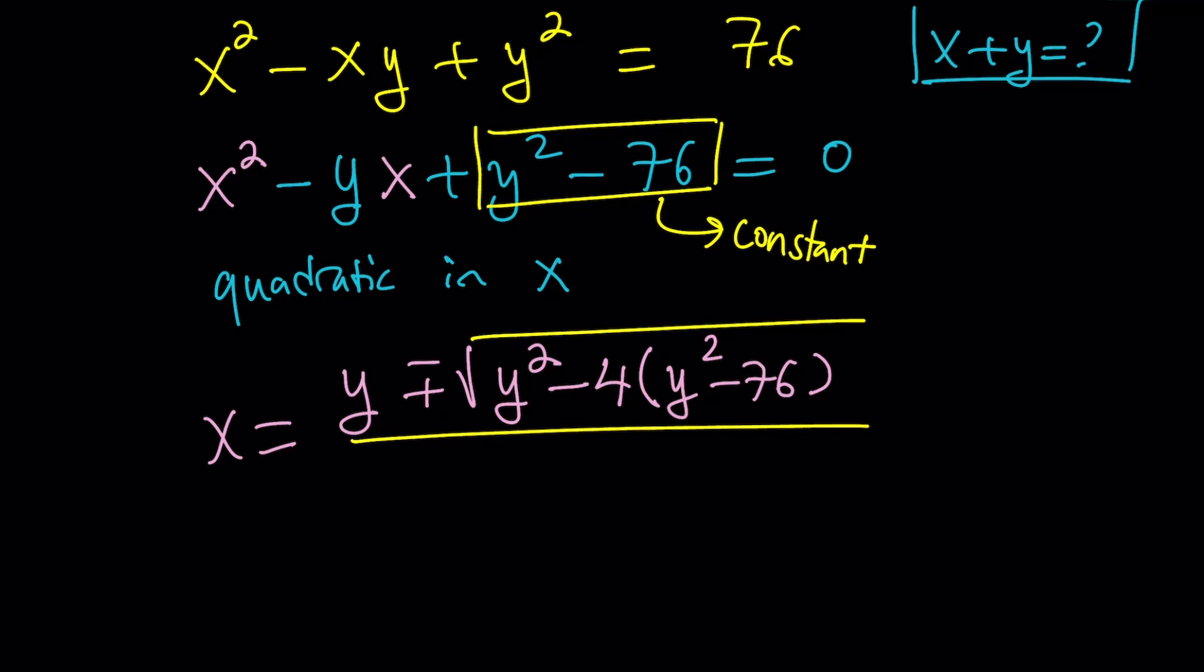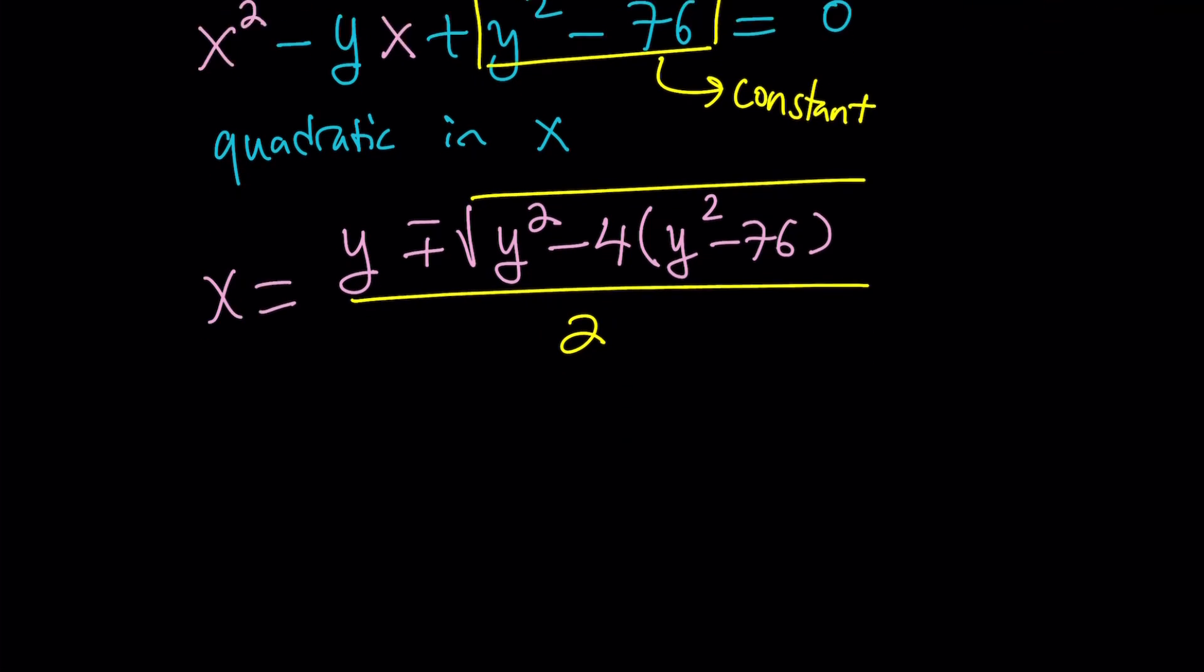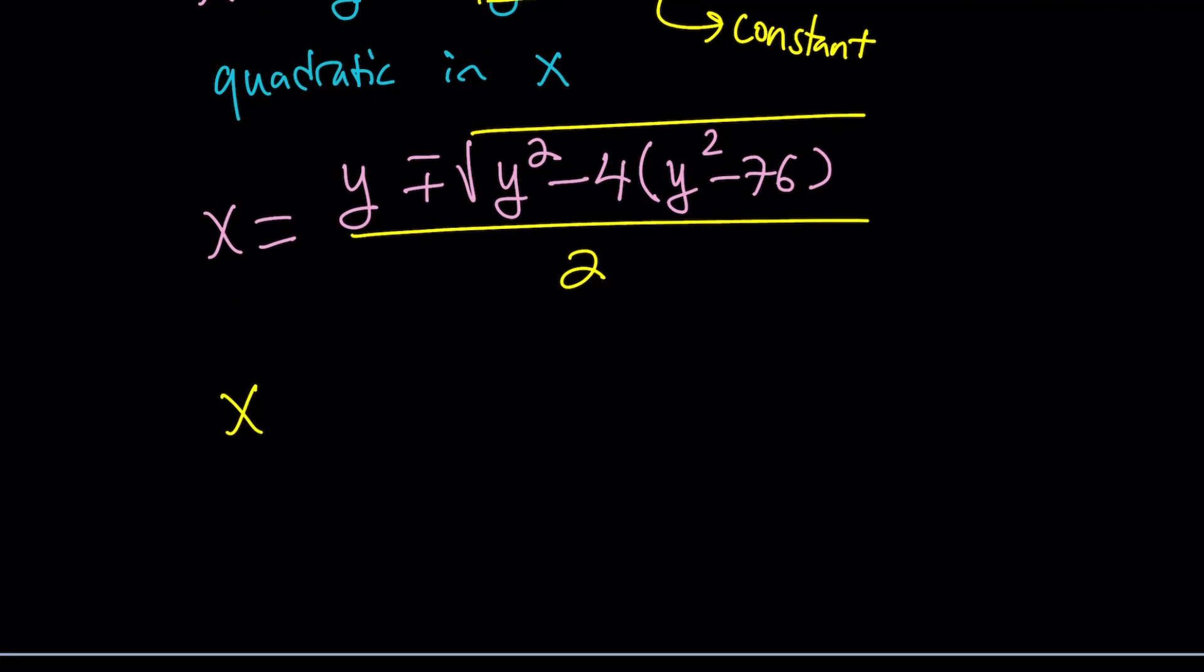All right. Now, let's go ahead and finish this up. We're going to divide it by 2. So, we have something under the radical, which needs to be simplified. Let's go ahead and simplify it. It's going to be y squared minus 4y squared, which is negative 3y squared. And then negative 4 times negative 76 is positive 304. So, we can write this as 304 minus 3y squared. Awesome.